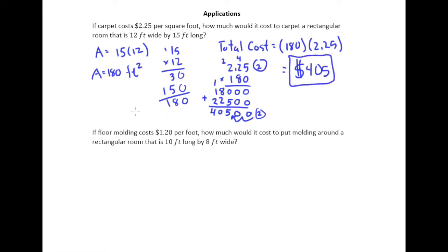All right, moving down to the next problem. It says if floor molding costs $1.20 per foot, how much would it cost to put molding around a rectangular room that is 10 feet long by 8 feet wide?